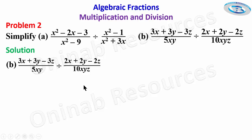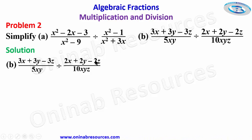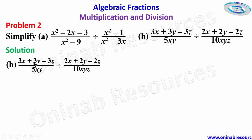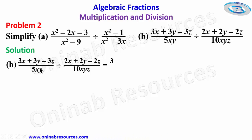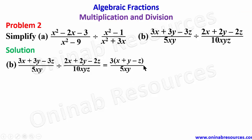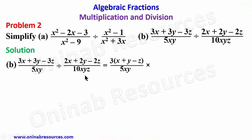For problem 2b we have 3x plus 3y minus 3z over 5xy, divided by 2x plus 2y minus 2z over 10xyz. To find the solution, we change the division to multiplication. We factor out 3 from the numerator of the first fraction, giving 3 into x plus y minus z over 5xy.